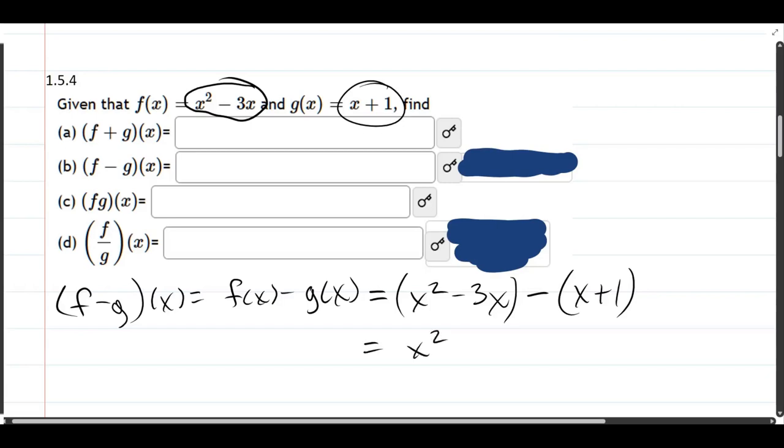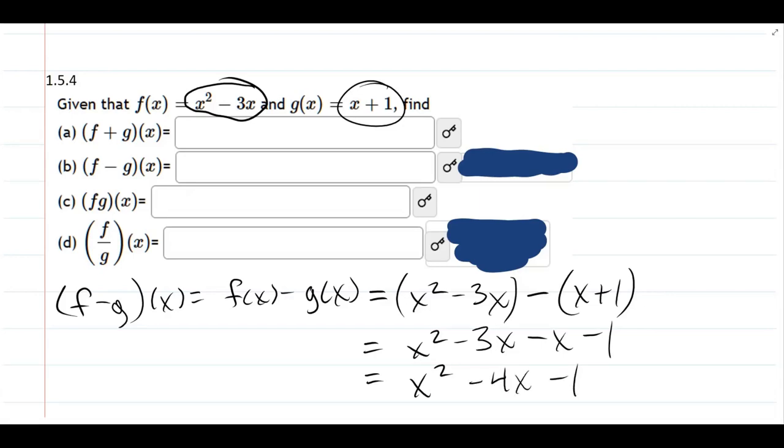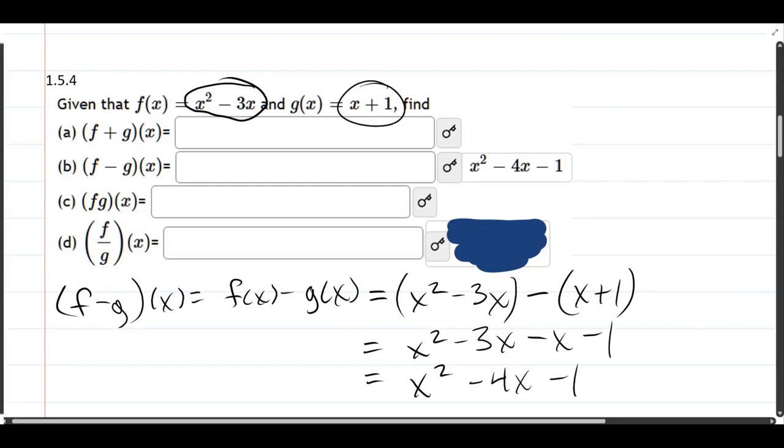So we have x squared minus 3x minus x minus 1. We can combine those middle terms. Minus 3x minus x is minus 4x minus 1. And that should be under here.